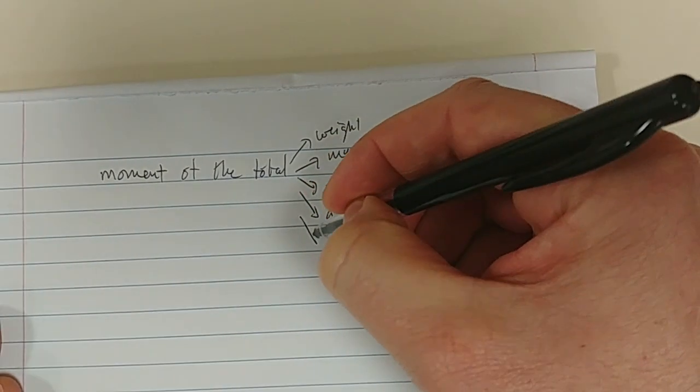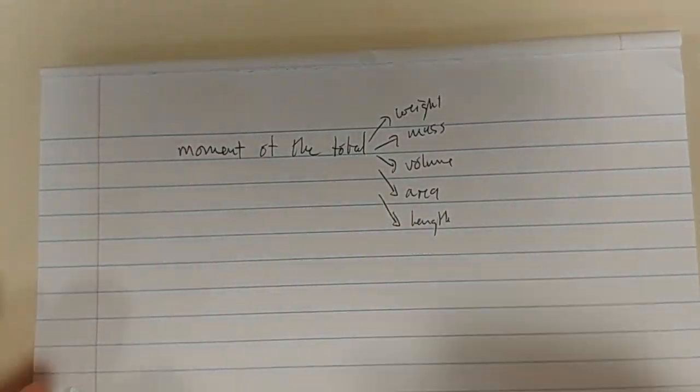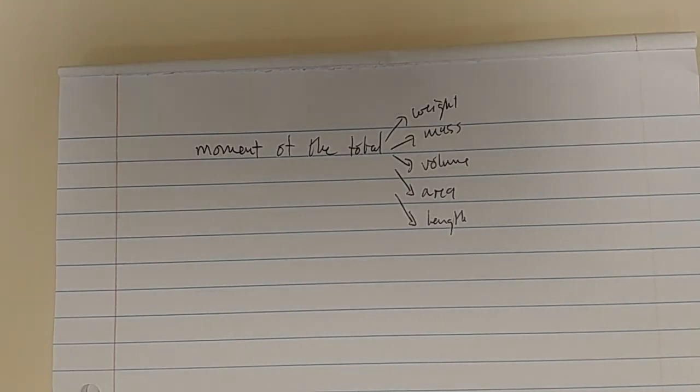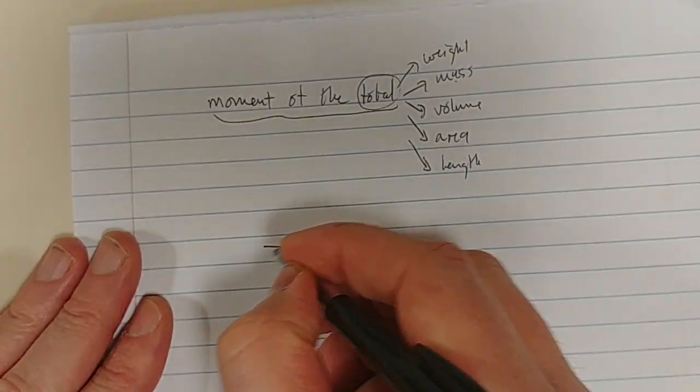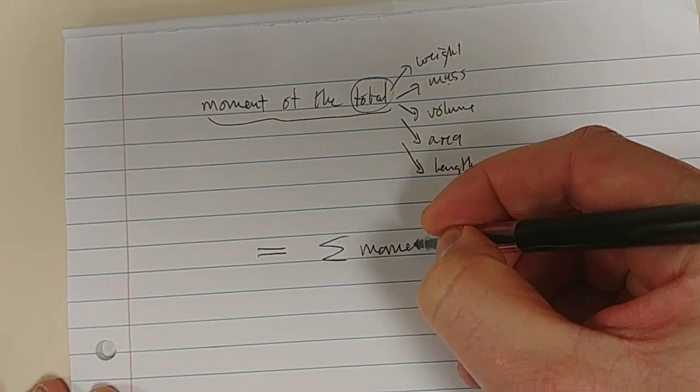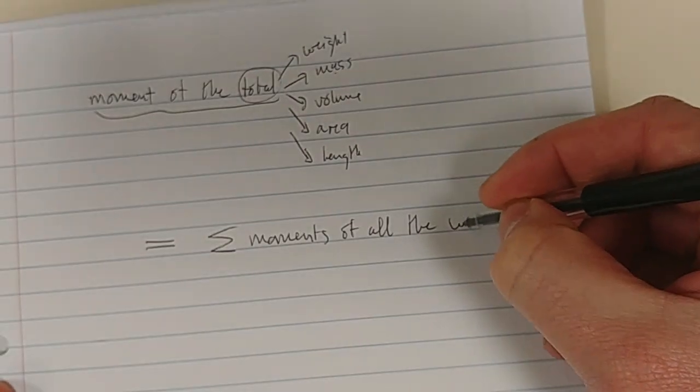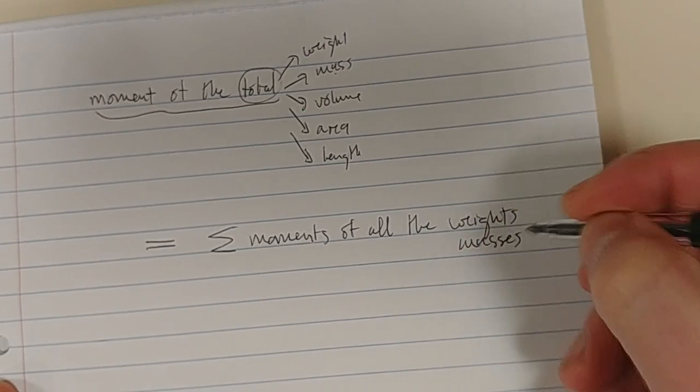I want you to get this conceptual idea. We take the moment of the total — whatever that total is. It could be the total weight, the total mass, the total volume, the total area, or the total length — whatever you're looking for: center of gravity, center of mass, center of volume, area, or line. It's the moment of the total equal to the sum of the moments of all the individual weights, masses, or areas.